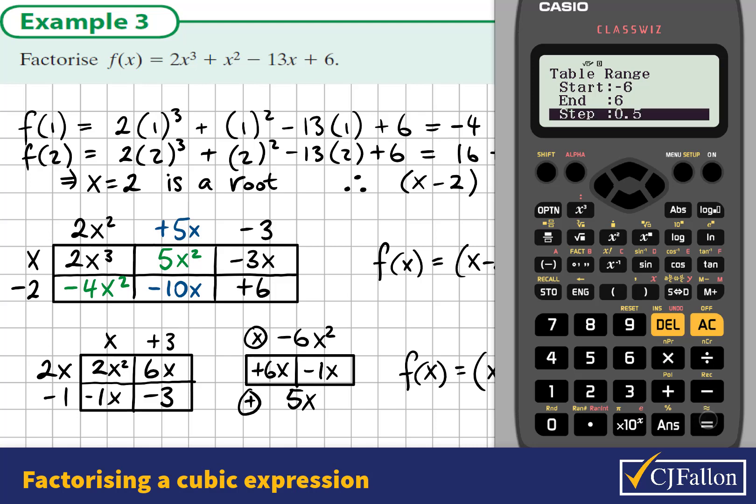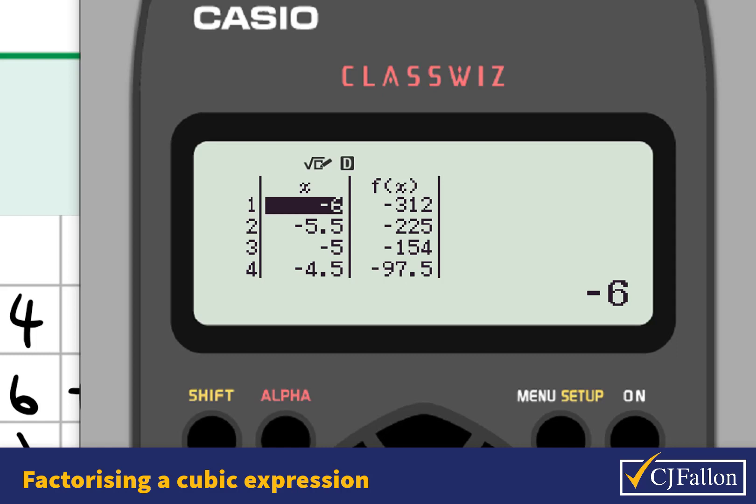This should be large enough based on the constant term of the cubic. I'm going up in steps of a half because it's a 2x cubed. So a half is going to be the steps. I'm looking for values here, input values, that give an output of 0. So they would be solutions.